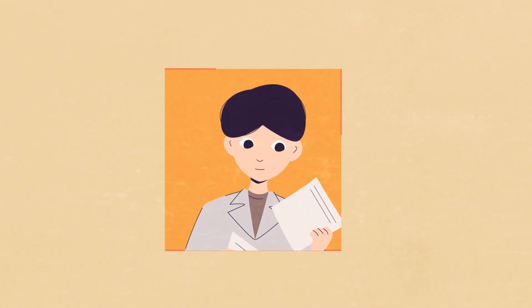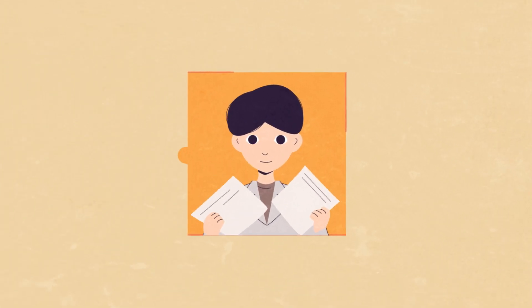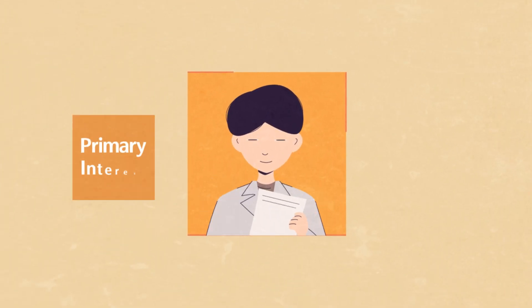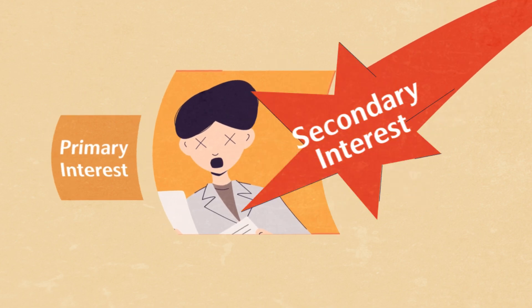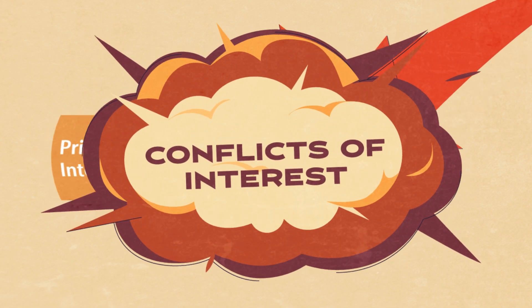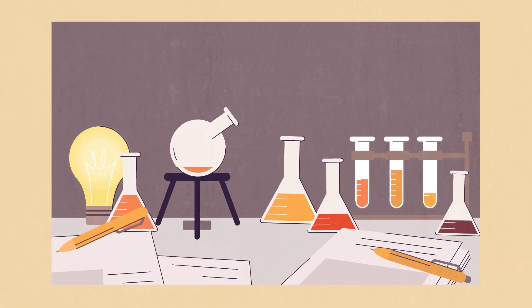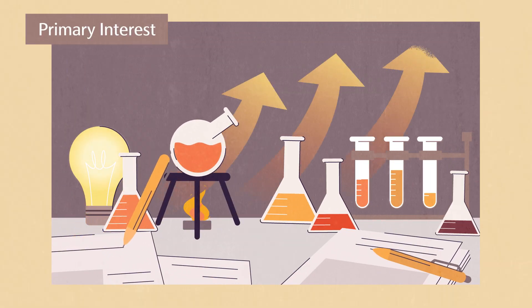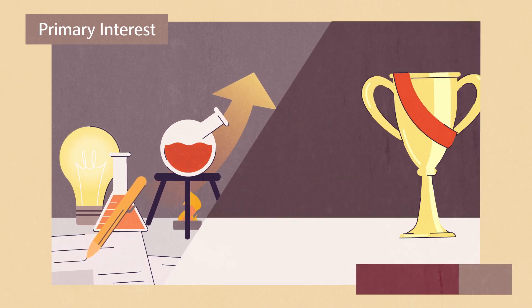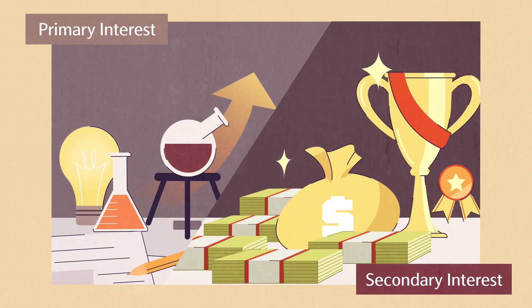Researchers often multitask and play different roles. Conflicts may arise when a researcher's professional judgment with regards to his primary interest is influenced or compromised by a secondary interest. With regards to scientific research, the primary interest is what advances scientific knowledge, while secondary interest is the financial or non-financial benefits that can be obtained for oneself.